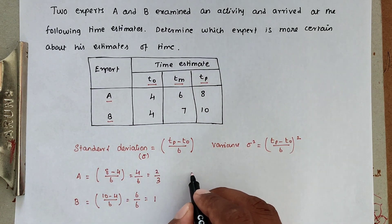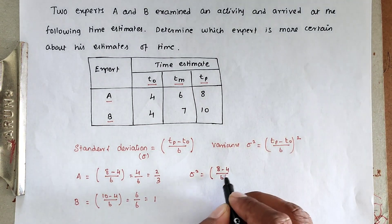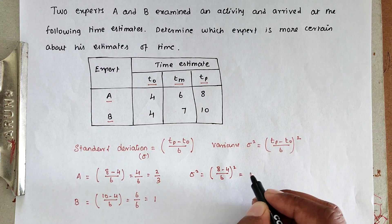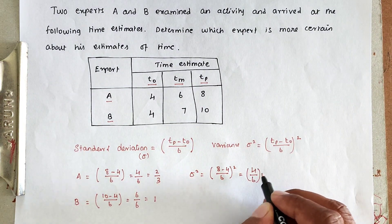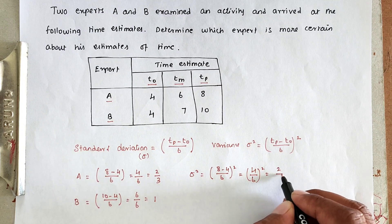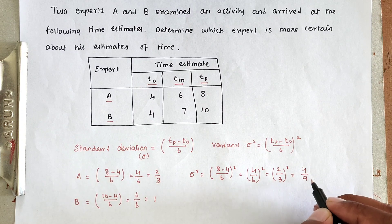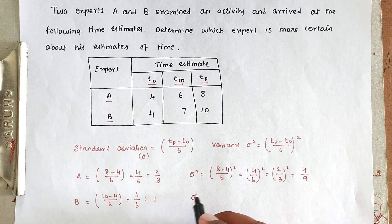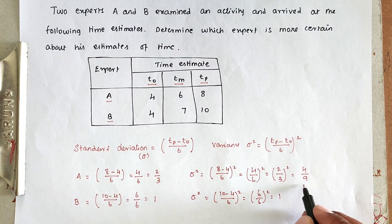Now we find the variance. For Expert A: σ² = ((8 − 4) / 6)² = (4/6)² = (2/3)² = 4/9. For Expert B: σ² = ((10 − 4) / 6)² = (6/6)² = 1² = 1.